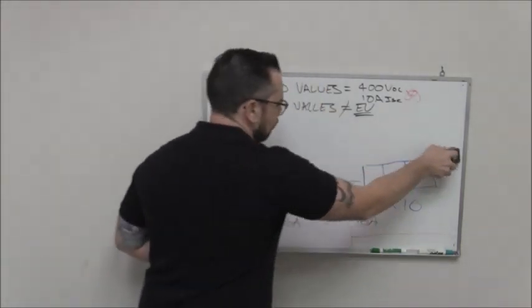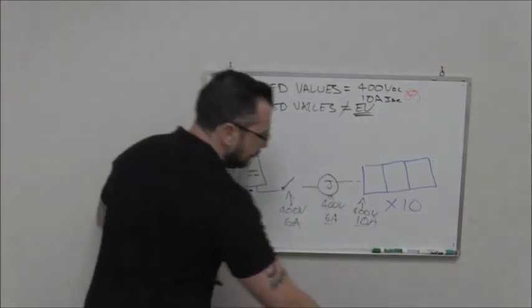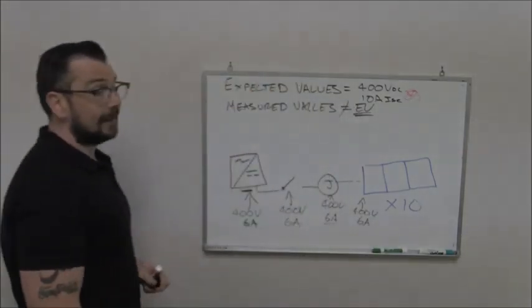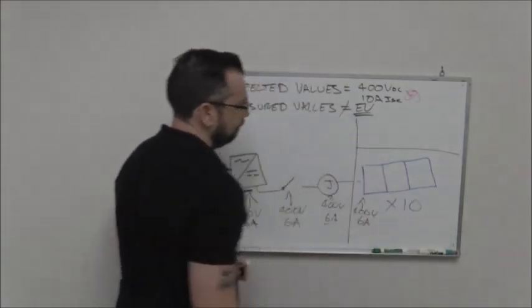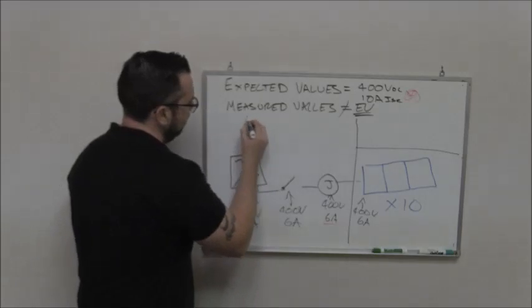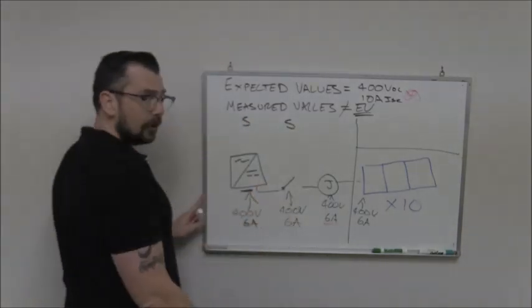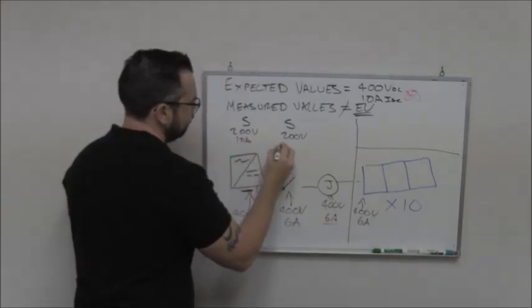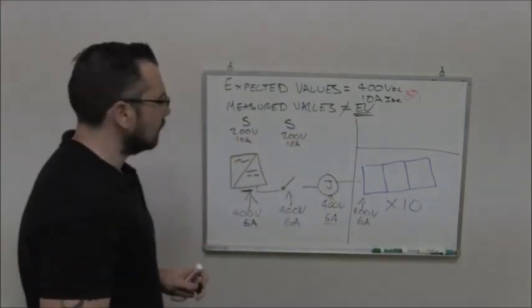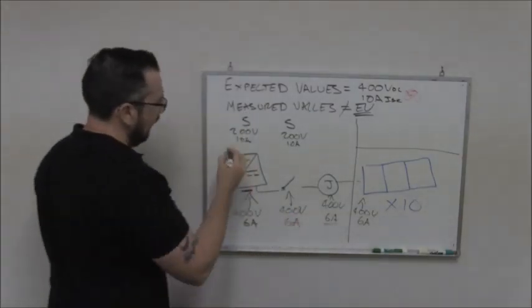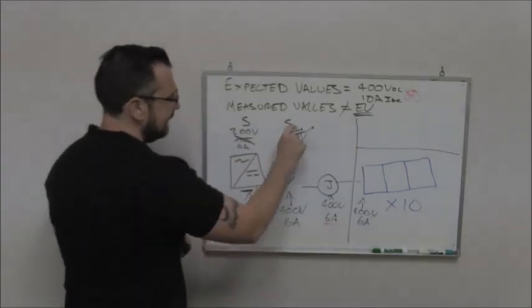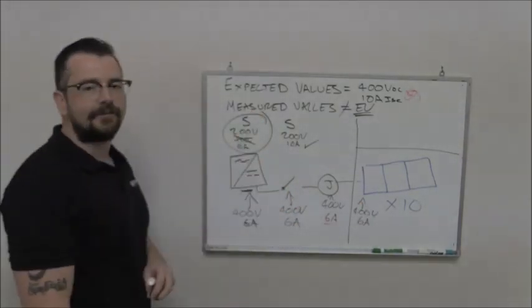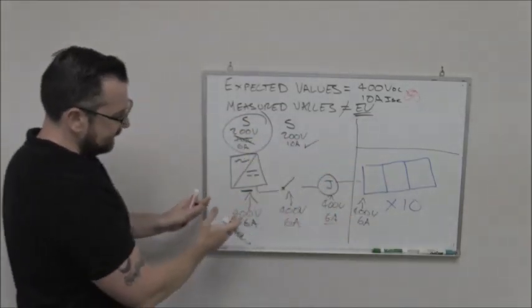So similarly, if my measured values here was still not what I expected, now I know the problem is in this section. So what do I do? I have 10 panels. I split them into 5 and 5. The voltage is going to drop by half. The current is going to stay the same. So I test this 5 with my PV150, and this comes out at 6 amps. I test this half, and it comes out as 10 amps. Now I know the problem is in this half.